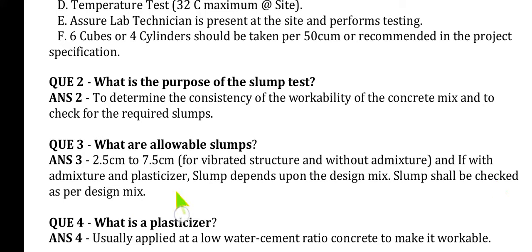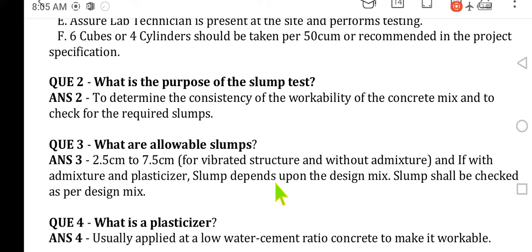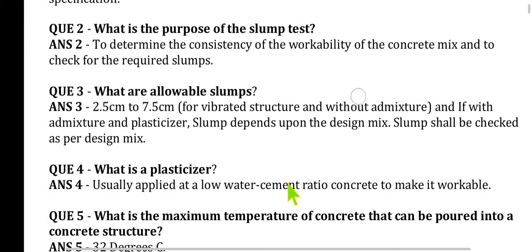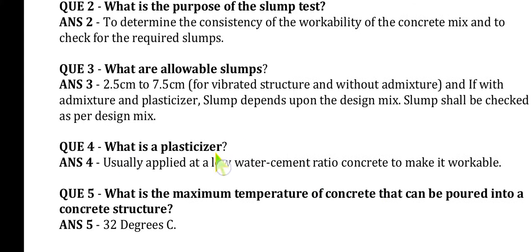For slabs, we take 50 mm to 100 mm slump; for columns, 75 mm to 150 mm. When pouring concrete by concrete pump, the slump value is 150 mm to 200 mm. Question 5: What is plasticizers? Plasticizers are admixtures usually applied at a low water-cement ratio to make concrete workable.